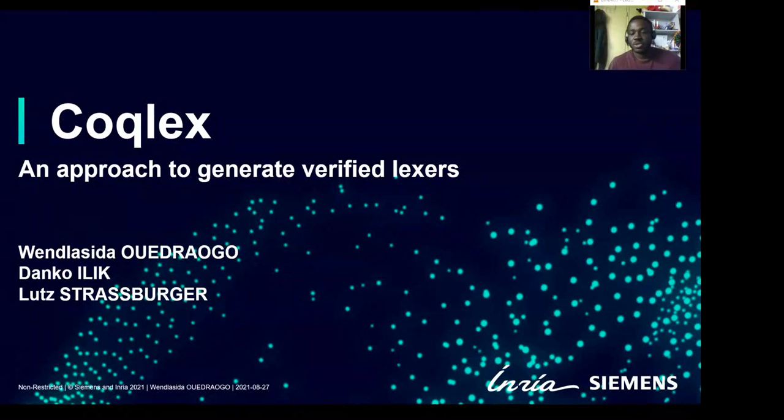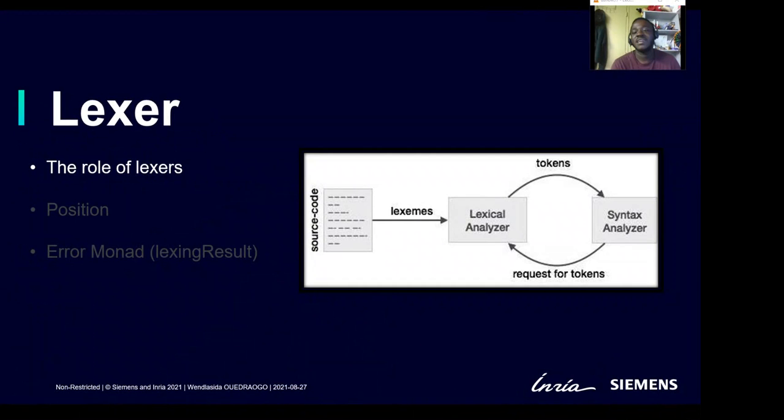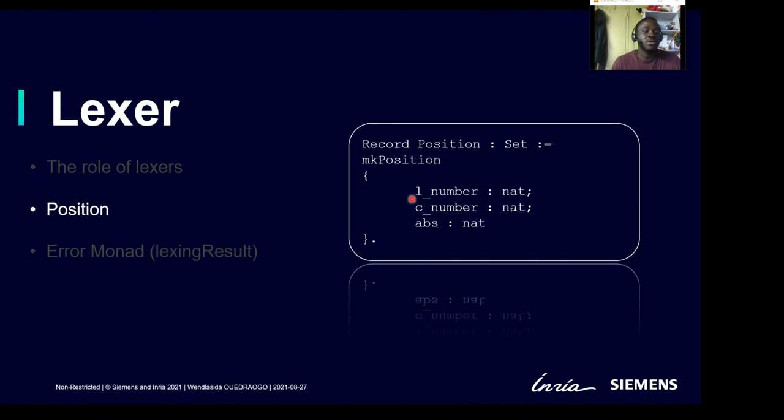To put everyone on an equal footing, I will re-explain what a Lexer is. A Lexer is the component that is in charge of producing tokens from source code. For that, it has to handle its location in the source code. A location can be defined as a record containing the line number, the column number, and the absolute position. The absolute position is the number of characters that have already been read or consumed.